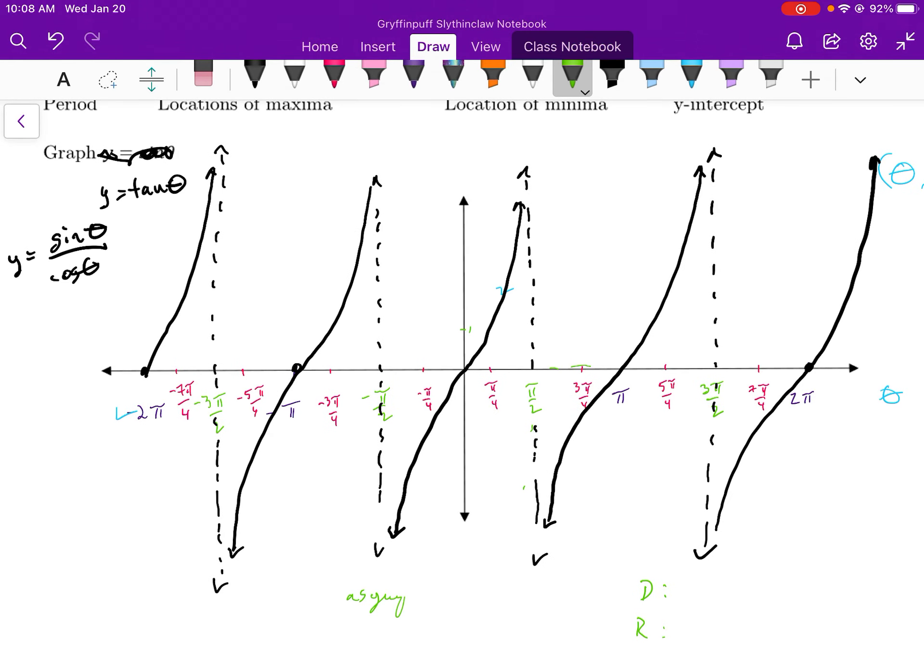And the asymptotes. So the location of the asymptotes are probably really well described as pi over two plus k pi.